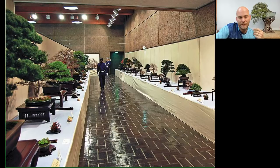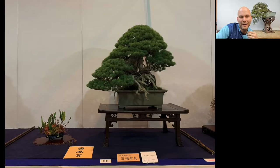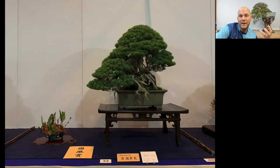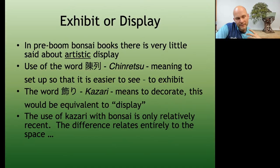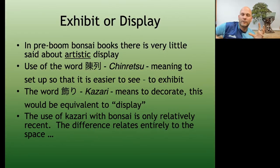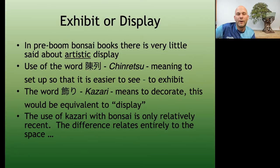These are relatively modern pictures — this is the Kokufu, a picture from Bill Valavanis's blog — and there's very little difference between how the trees are exhibited then and now; obviously the quality of the trees is different. When we look at the history of the exhibits, we come across quite interesting language. In pre-boom bonsai books — when we talk about the boom we mean the 1960s onwards, when bonsai really exploded — they used the word 'chinretsu,' which literally means just to set up so it's easier to see.